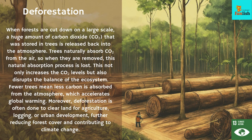Deforestation: When forests are cut down on a large scale, a huge amount of carbon dioxide (CO2) stored in trees is released back into the atmosphere. Trees naturally absorb CO2 from the air, so when they are removed, this natural absorption process is lost. This not only increases CO2 levels but also disrupts ecosystem balance. Fewer trees means less carbon is absorbed, which accelerates global warming.